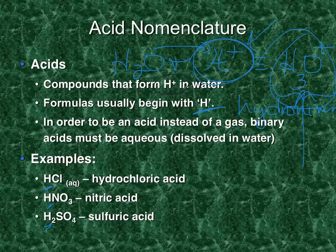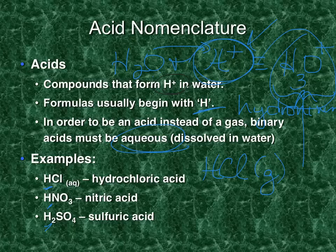What's interesting is substances don't act as an acid typically unless they're dissolved in water. For example, hydrogen chloride in gas form is not particularly acidic until it comes in contact with water — and that's the point at which it releases the hydrogen ion and becomes very caustic.